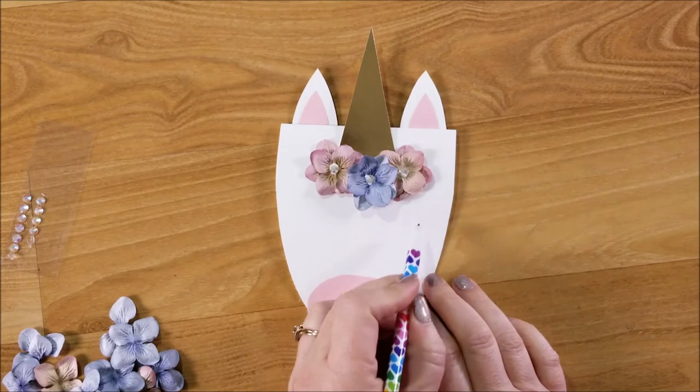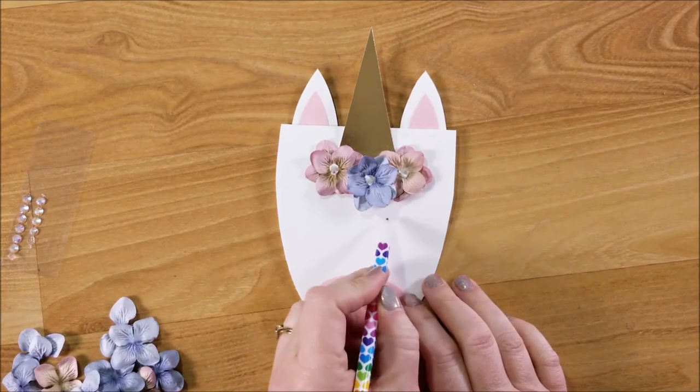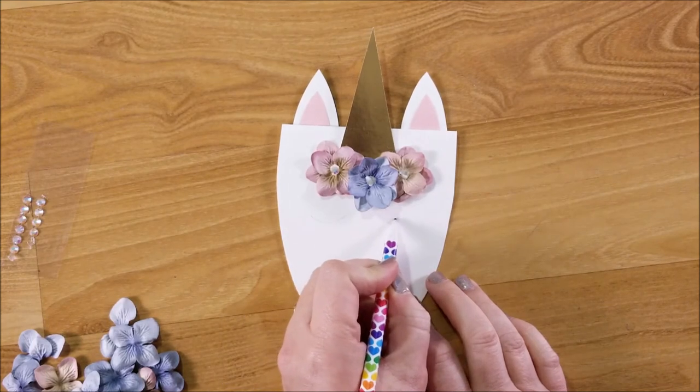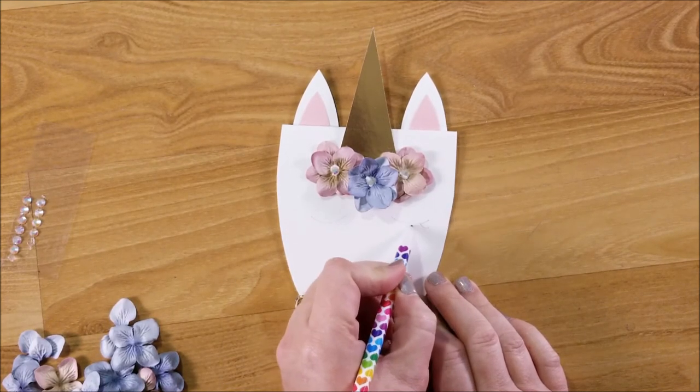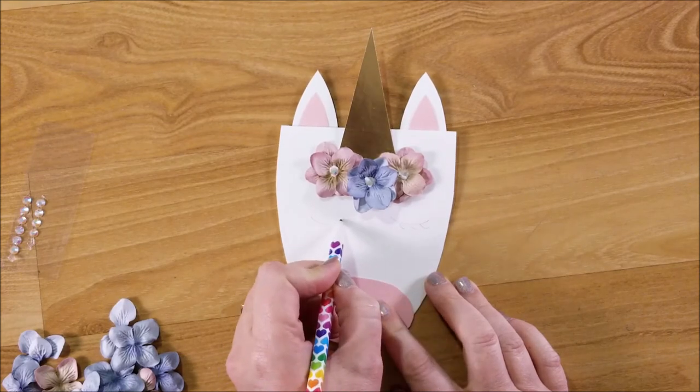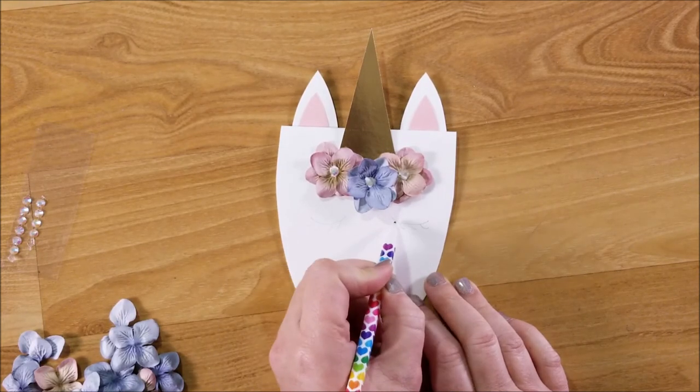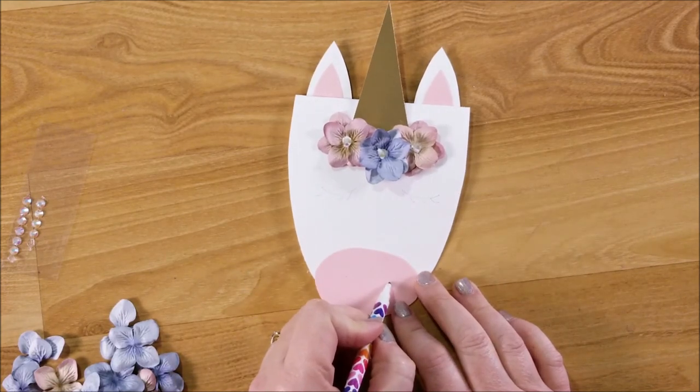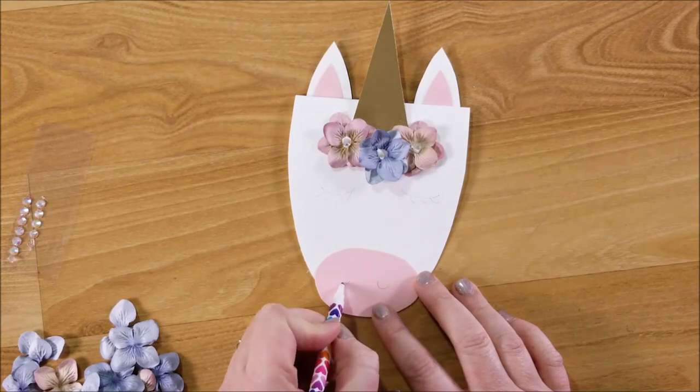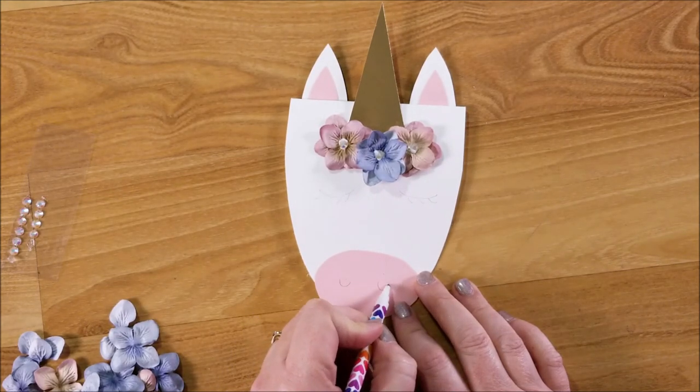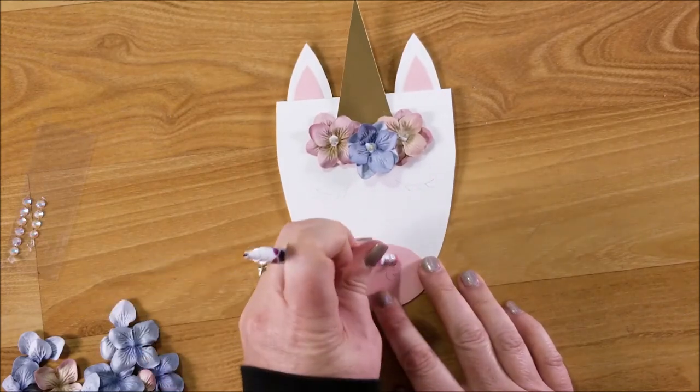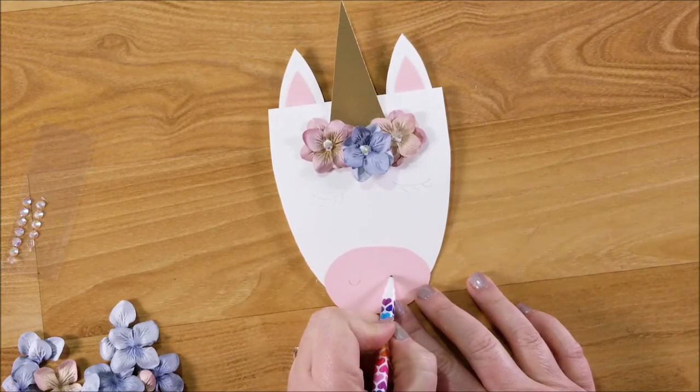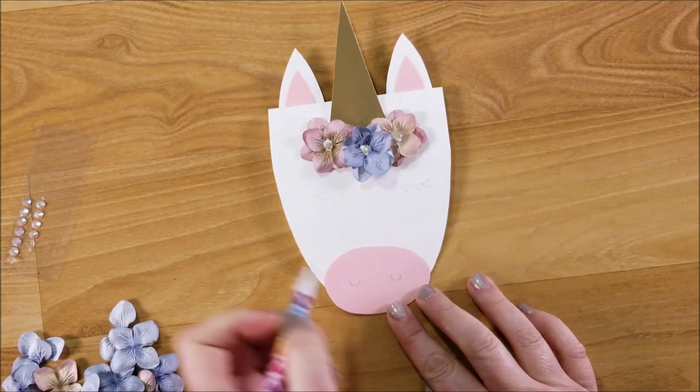Next thing you want to do is add in the eyelid eyelash parts here. Let's do a simple little swoop with some eyelashes and I'll come back with my Sharpie. And then down here, just add a couple little nose, nostril marks there. Make that one a little bit smaller. Just like that.